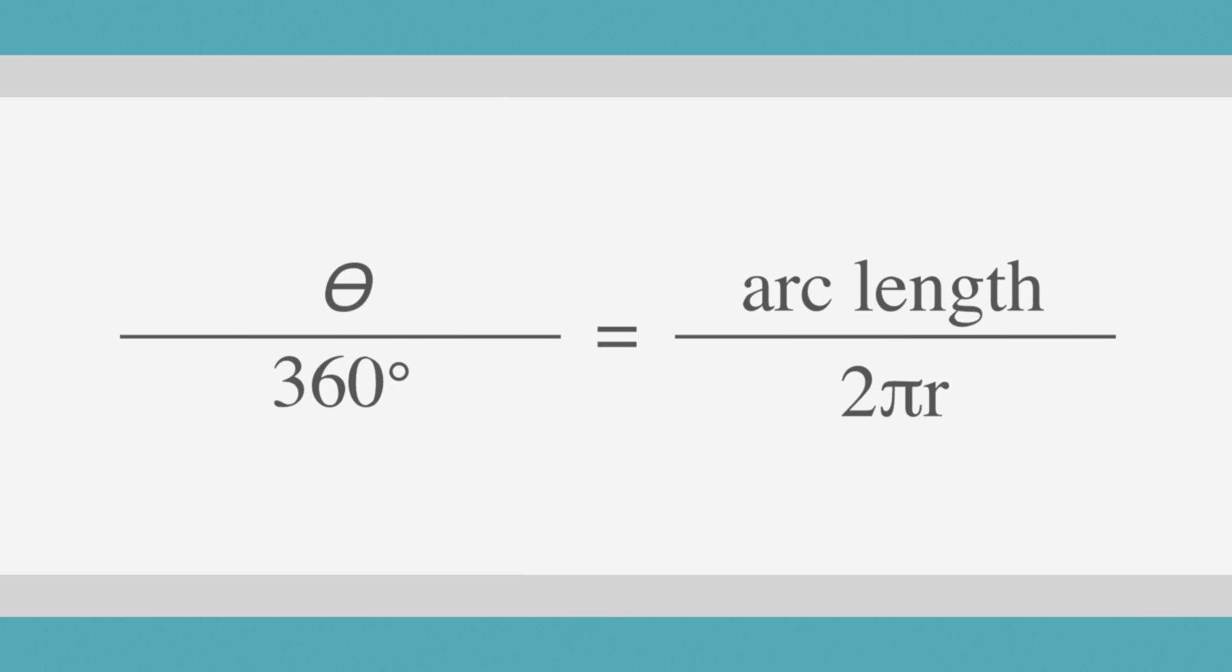We can make this formula more user-friendly by substituting the Greek letter theta for the central angle and substituting the formula for the circumference of a circle, 2πr, for the circumference.